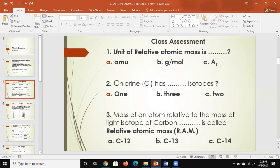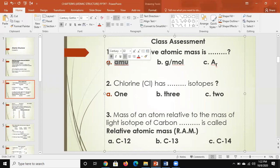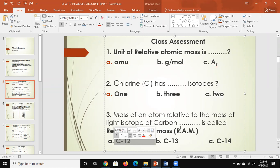Now look there, boys. This is the question: unit of relative atomic mass is...? The answer is option A - amu, atomic mass unit. Chlorine has how many isotopes? Two isotopes. Mass of an atom related to the mass of light isotope of carbon... is called relative atomic mass. What does it mean? We are saying Carbon-12, because we are dealing with Carbon-12.